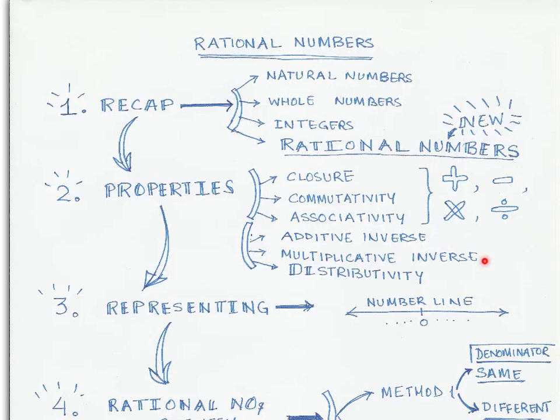The next part we look at is how do we represent the rational numbers on a number line. We have already learned representing the natural numbers, whole numbers, and integers on a number line. How do we represent rational numbers?